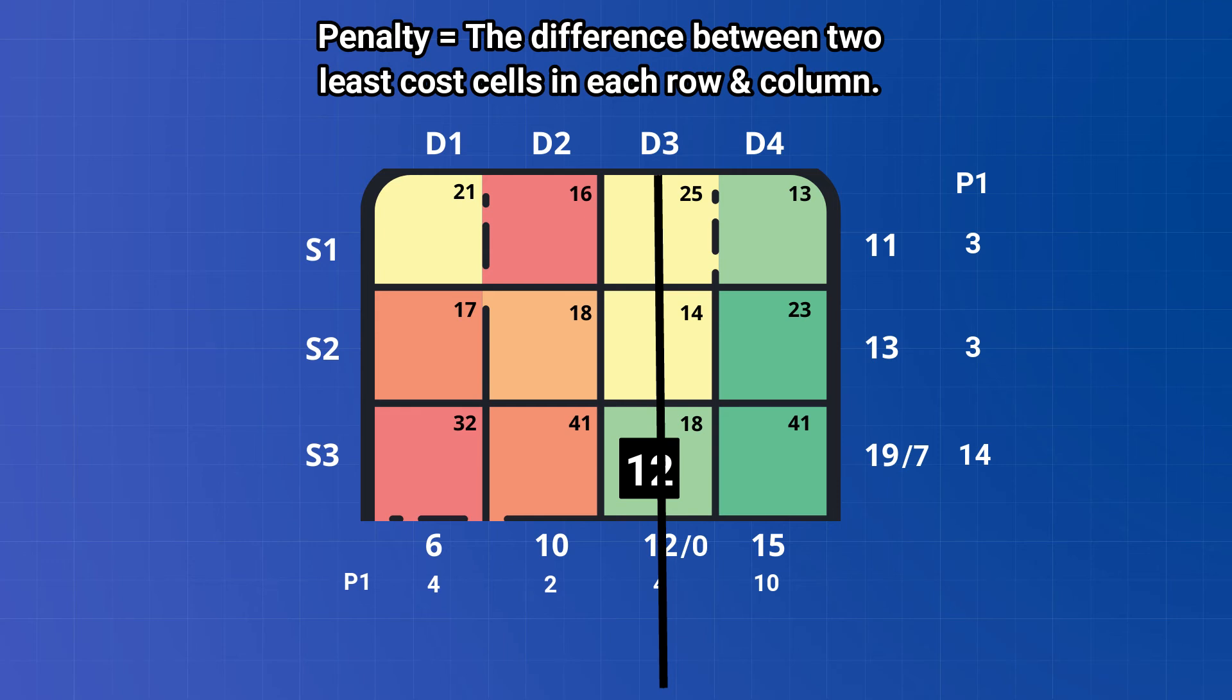Now again we have to calculate the penalty for every row and every column because now the matrix has been changed. This we will name as P2. We will make necessary allocations as per the procedure and will calculate two more penalties, namely P3 and P4, and repeat the same process of allocation.